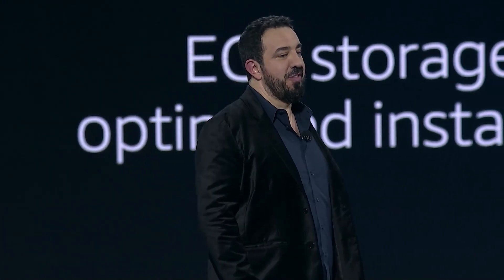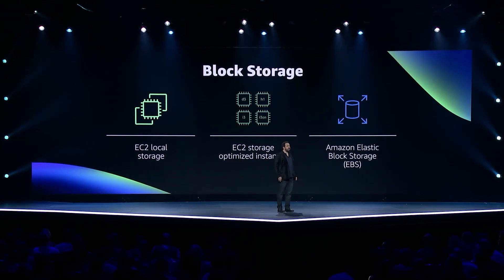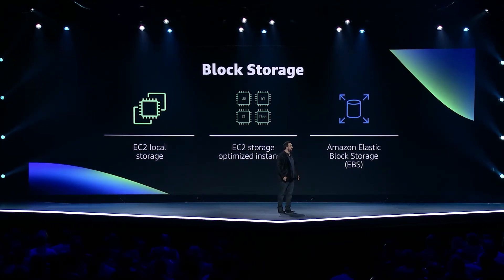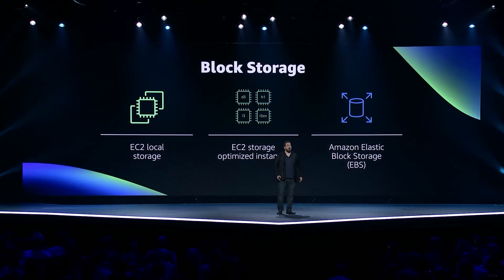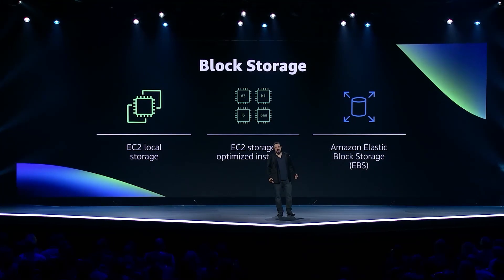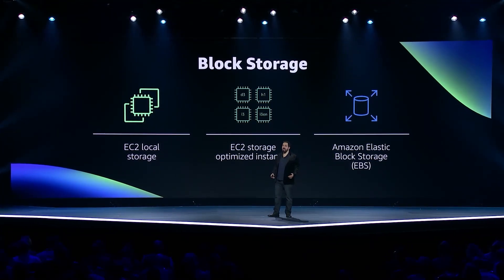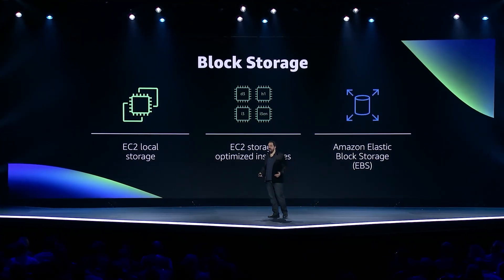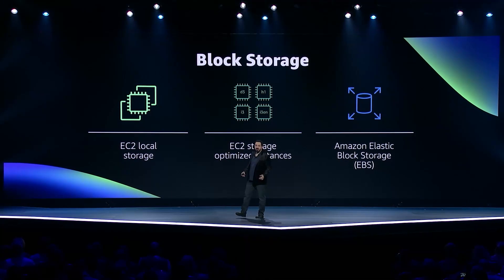Now let's look at another type of storage that's really important for computing: block storage. AWS offers a number of different block storage options, including a variety of EC2 instances with locally attached storage. We also offer Elastic Block Storage, or EBS, which is a highly available off-instance block store, or SAN.